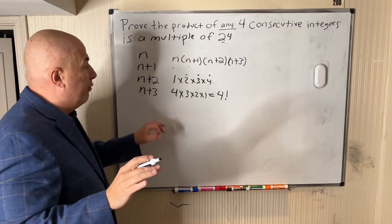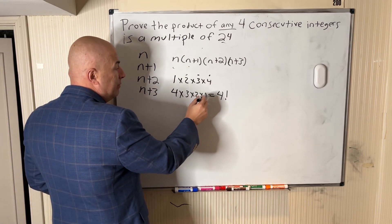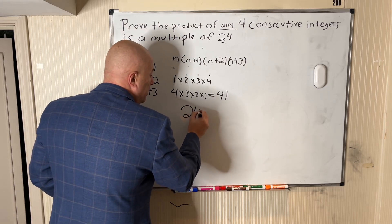But if we simply take the 4 factorial formula, 4 times 3 times 2 times 1, we get 24.